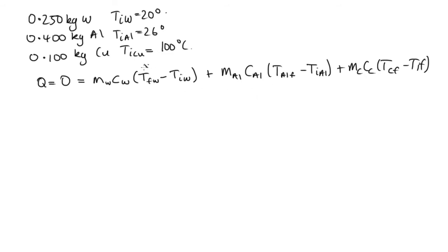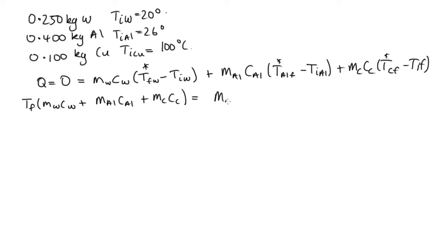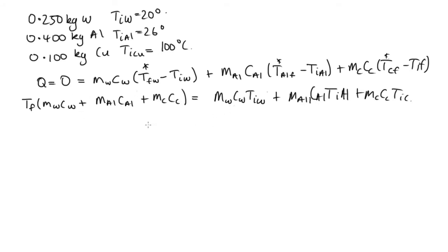Now, these final temperatures are all the same because at the end the system is in equilibrium. So we factor out the final temperature outside of: mass of water times heat capacity of water, plus mass of aluminium times heat capacity of aluminium, plus mass of copper times heat capacity of copper. This equals mass of water times heat capacity of water times initial temperature of water, plus mass of aluminium times heat capacity of aluminium times initial temperature of aluminium, plus mass of copper times heat capacity of copper times initial temperature of copper. We divide by the bracketed term to get the final temperature.